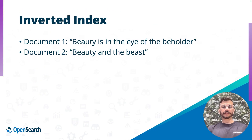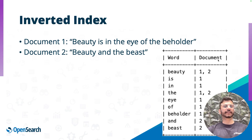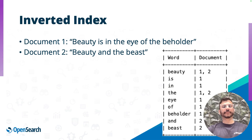The data structure used by Lucene is called the inverted index, and it looks something like this. We have two sample documents, and we have the word list — or the terms list — and the doc ID list. The term 'beauty' appears in both documents (document 1 and 2), whereas the term 'eye' appears only in the first document, and the word 'beast' appears only in the second document. The inverted index stores more than just the terms list and the doc IDs list.